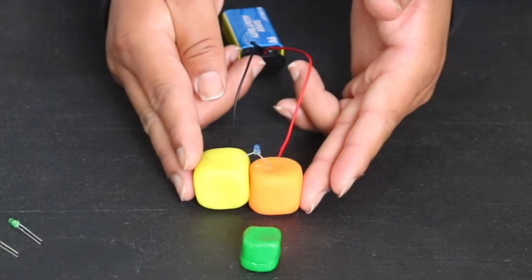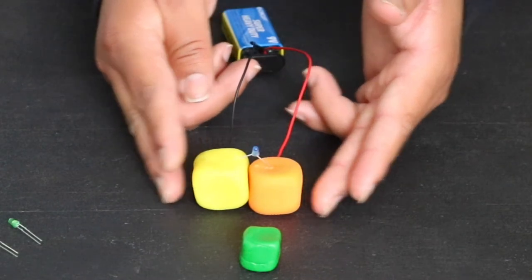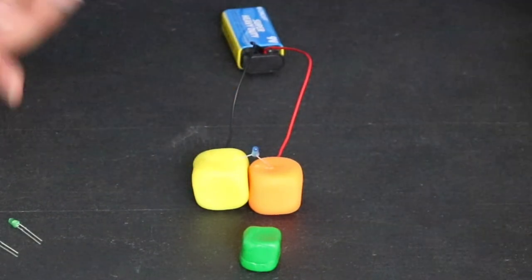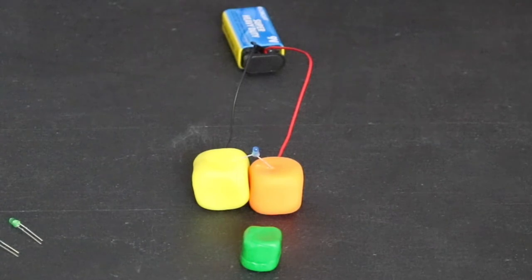Now, push your lumps of play-doh together and watch what happens. The LED light should turn off. We created a short circuit. Electricity likes to follow the path of least resistance. When the lumps of play-doh touch, the electricity takes a shortcut through the play-doh instead of going through the LED light, so the LED light does not light up.